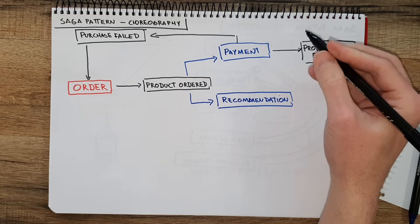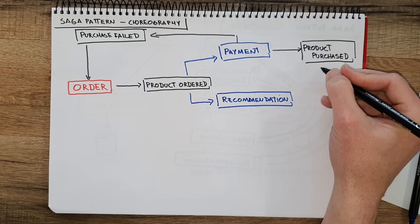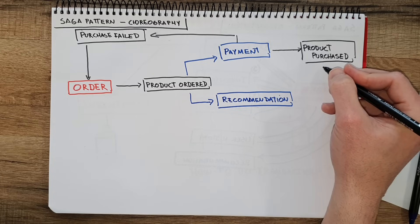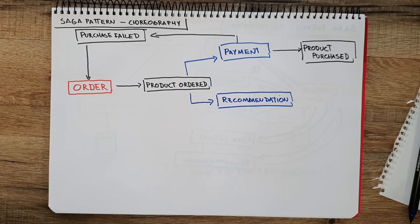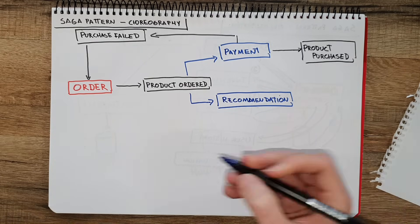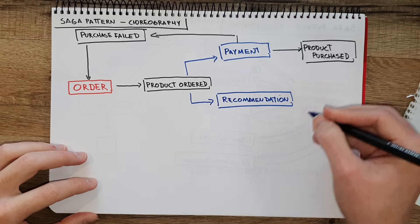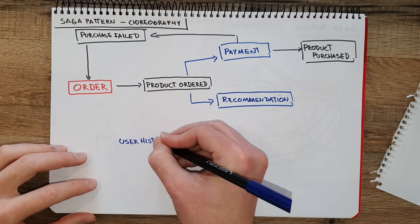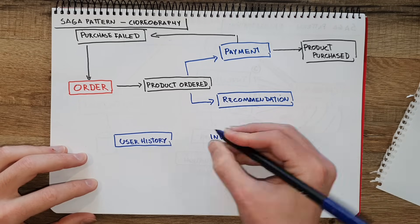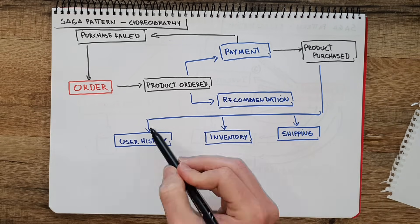Now let's go with the happy path and say that the payment was successful and the product was purchased. Now we can have multiple services reading from this event: we can update the user order history, update the inventory, and start the shipping.